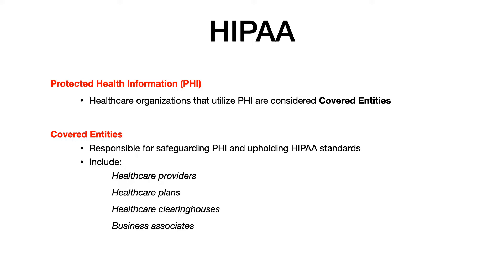Covered entities include healthcare providers — the actual people working within organizations — healthcare plans, healthcare clearinghouses, and all business associates. It's very high yield on USMLE, COMLEX, or in-class exams to get a question about a seemingly neutral third party doing business with a hospital or clinic, such as a billing company. Those third parties have to sign a business associates agreement, or BAA, which ties them to the covered entity and requires them to uphold HIPAA standards when utilizing PHI.